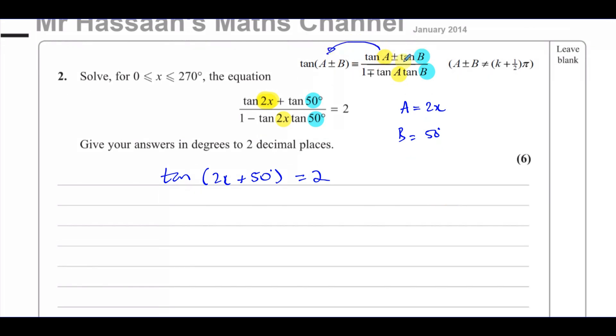So you just have to recognize that this can become that. Tan 2x plus tan 50 over 1 minus tan 2x tan 50 becomes tan of 2x plus 50 degrees. Now what can we do with this?